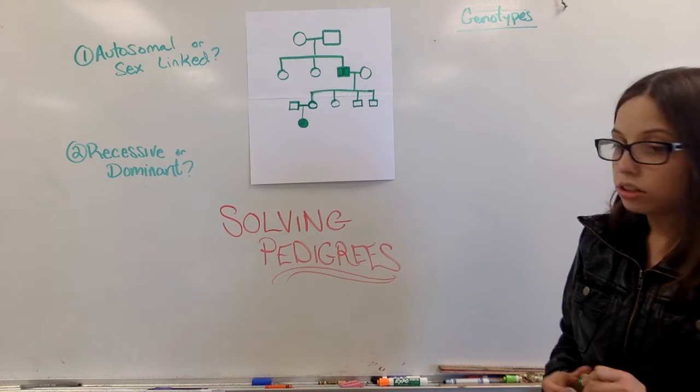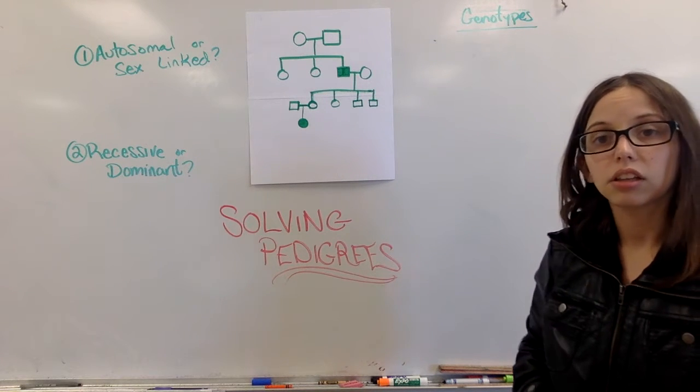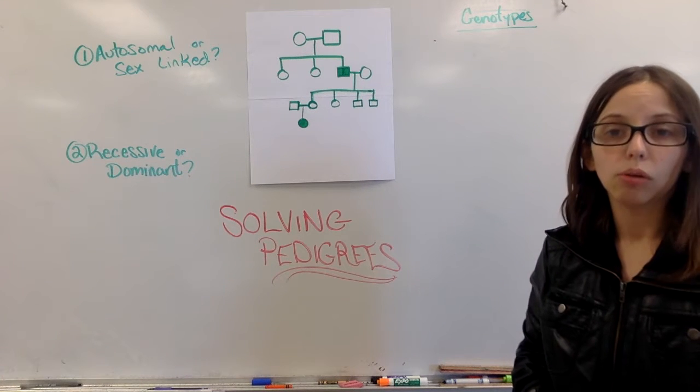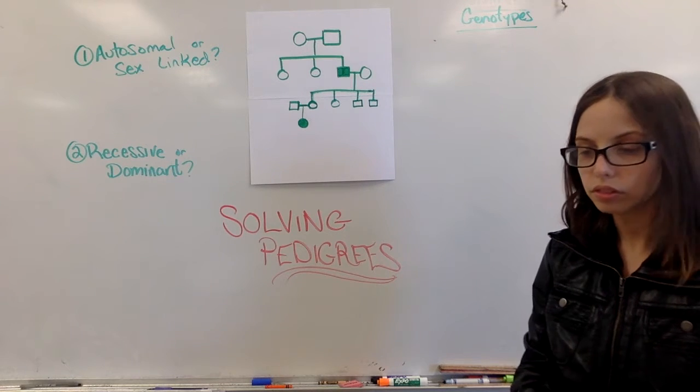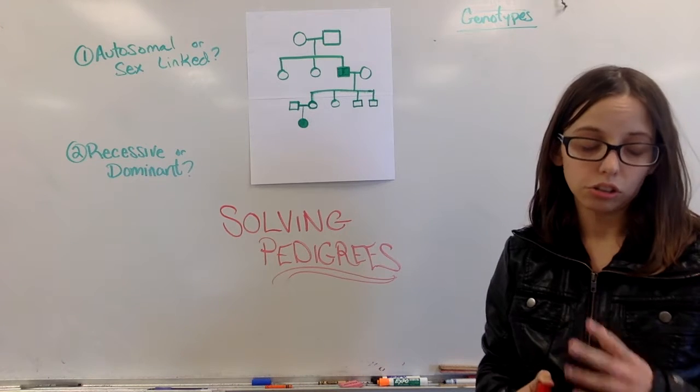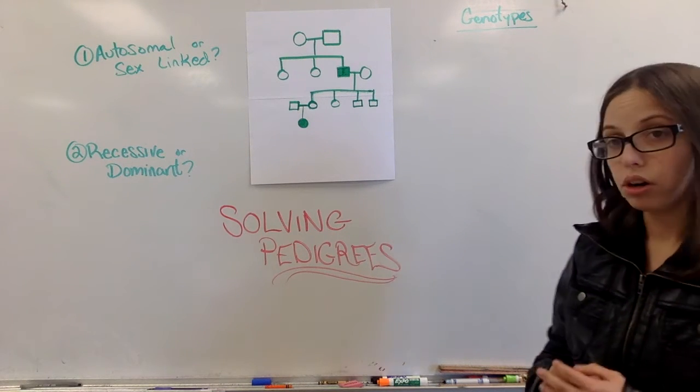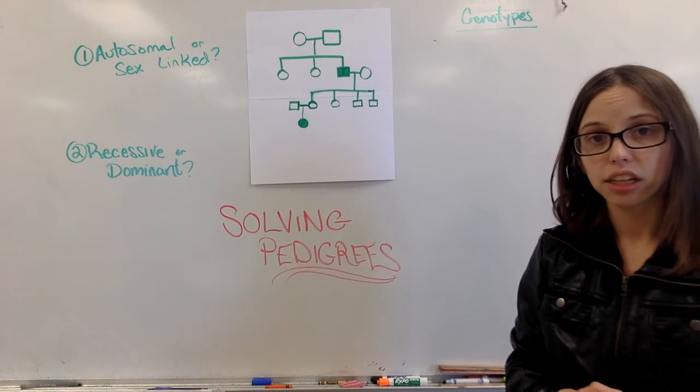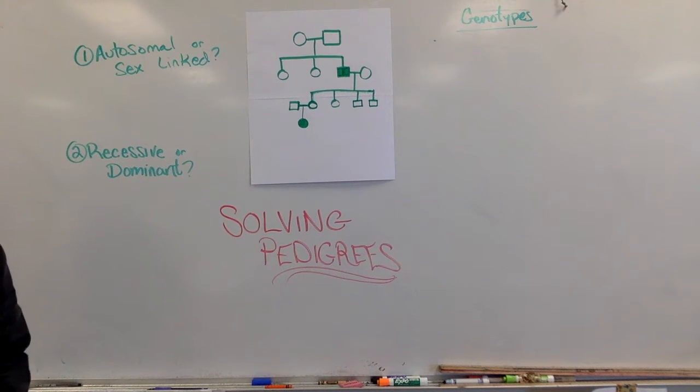We can use the pedigree to determine if a trait is autosomal or sex linked. What autosomal means is that the trait is carried on one of the first 22 chromosomes. Sex linked are genes or traits that are carried on the 23rd pair, the sex pair, and for our purposes we're only going to be looking at X-linked traits because everybody has at least one X chromosome. So how do we figure out is it autosomal or is it recessive? We have a picture up here that's what we're going to use first.